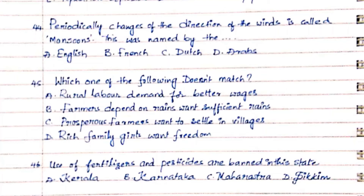Question 45: Which one of the following doesn't match? Option A. Rural labor demand for better wages, Option B. Farmers depend on rains, want sufficient rains, Option C. Prosperous farmers want to settle in villages, Option D. Rich family girls want freedom. The answer is Option C. Prosperous farmers want to settle in villages.